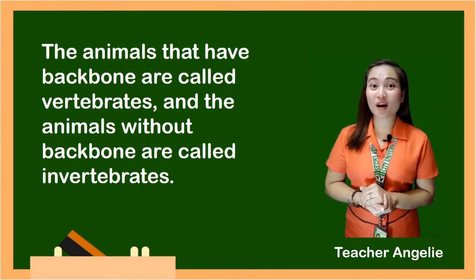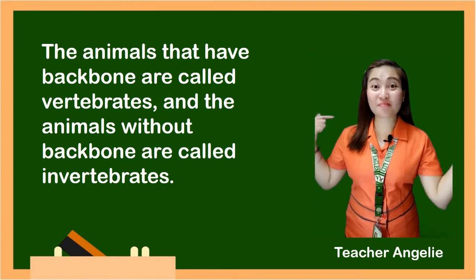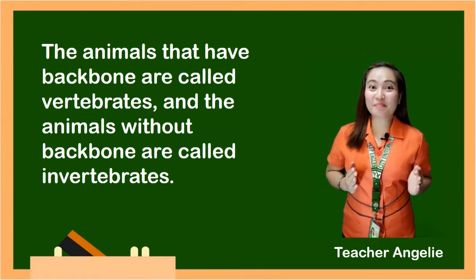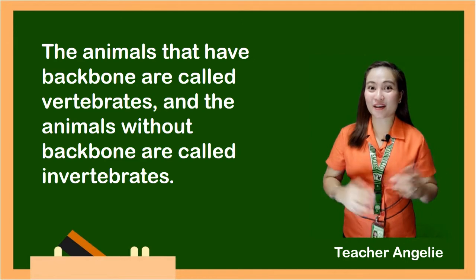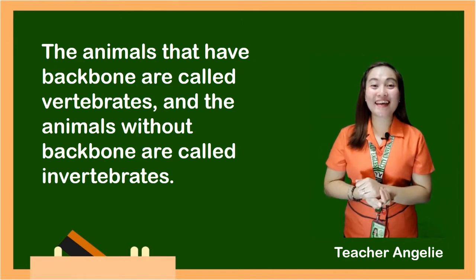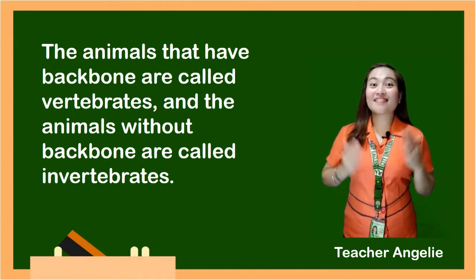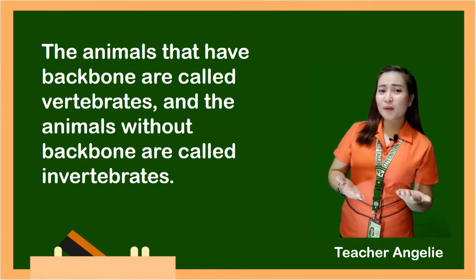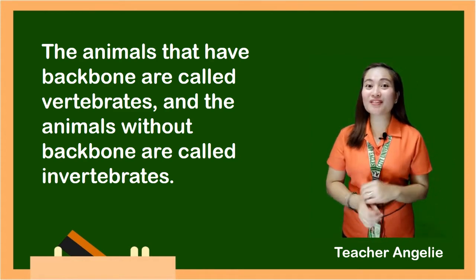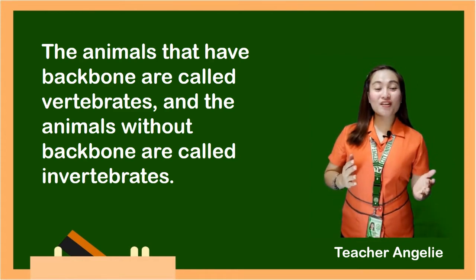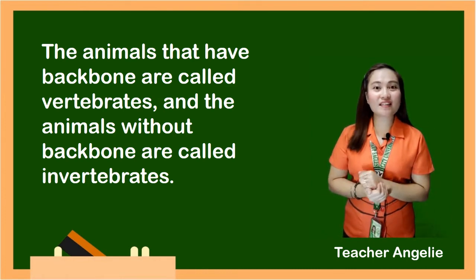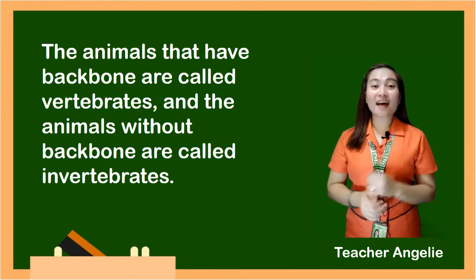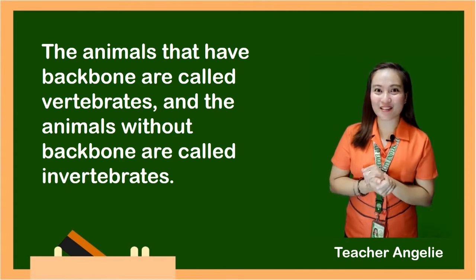So, the animals that have a backbone are called vertebrates, and the animals without a backbone are called invertebrates. They can be found anywhere — in our neighborhood, in the rivers, oceans, in the forests, mountains, deserts, and we can also see them in the zoo.